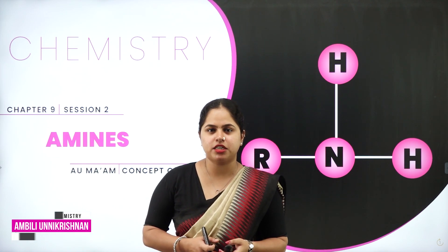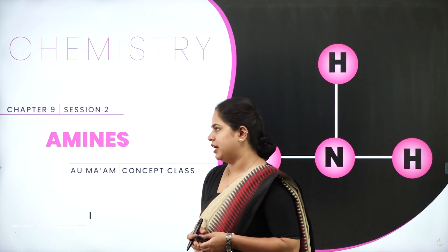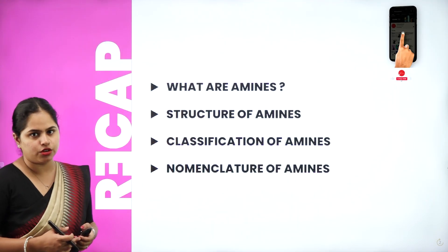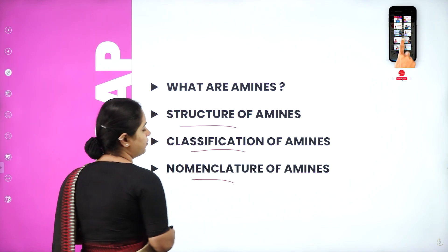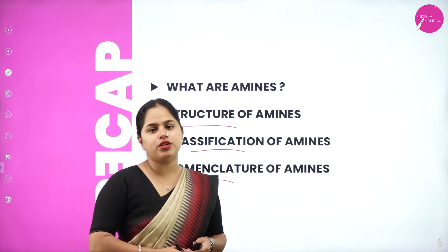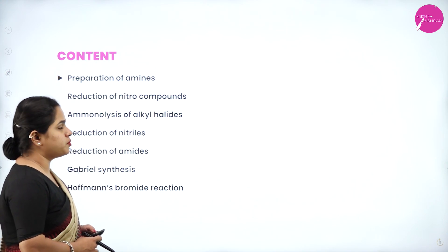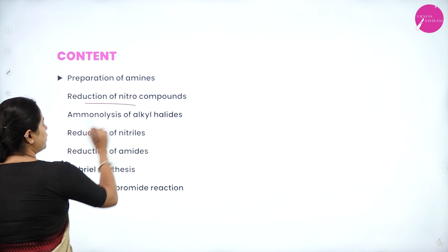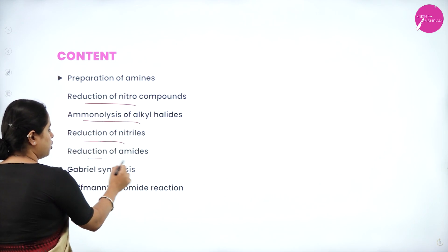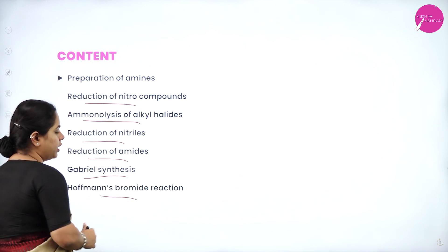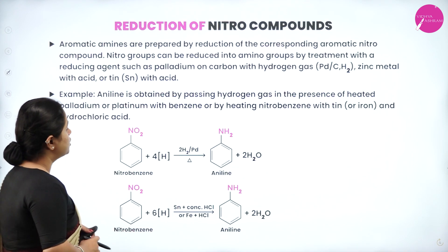Hello everyone, this is Ampli Unnikrishan from the department of chemistry. Today I'm back with session 2 of the chapter on amines. In the last session we discussed the introduction of amines, structure, classification, and nomenclature. In today's session we are going to cover the preparation of amines: reduction of nitro compounds, ammonolysis of alkyl halides, reduction of nitriles, reduction of amides, Gabriel synthesis, and Hofmann bromamide synthesis.